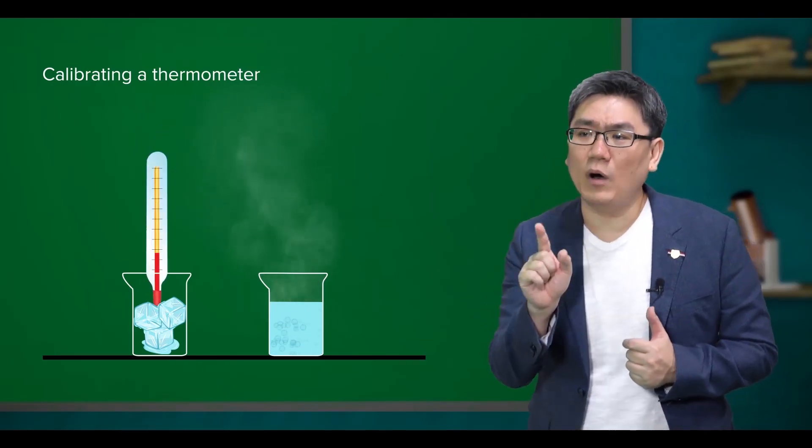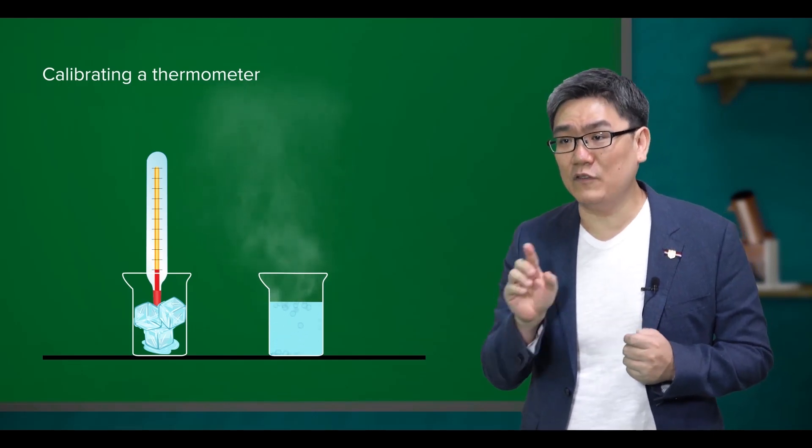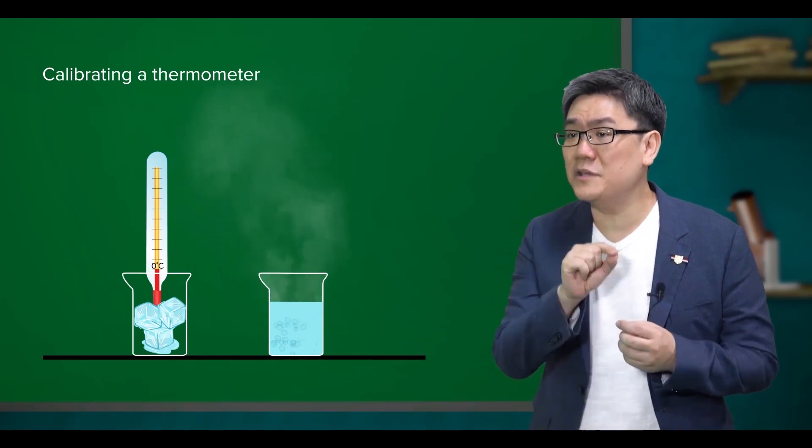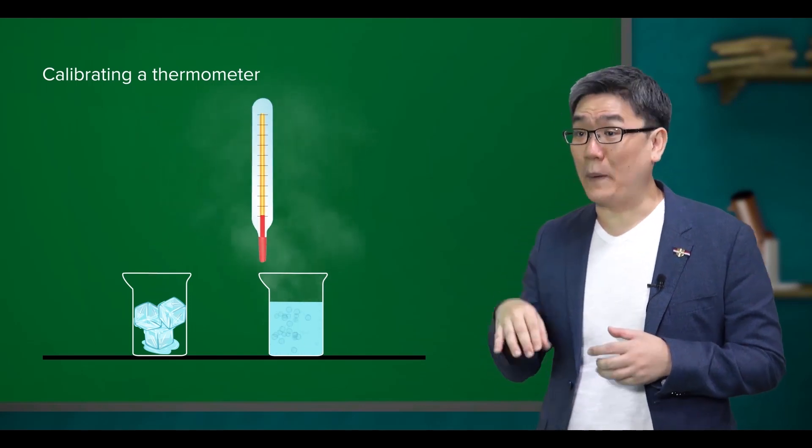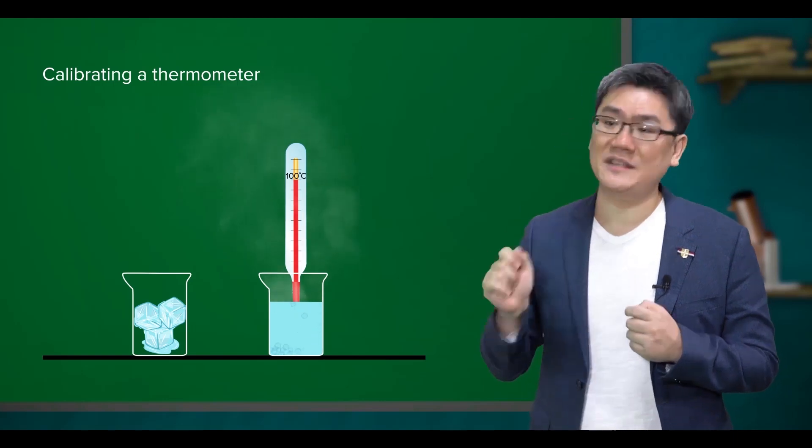So, you put the thermometer into the melting ice and once the level of mercury is stable, you mark the height of the mercury in the stem of the thermometer. Now, repeat the step for the boiling water and mark the height of the mercury in the stem.